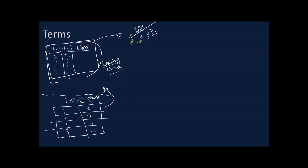We have now separated the training phase from the testing phase and need to evaluate our classifier's performance. One very intuitive and easily implemented metric is accuracy. We take the unseen samples — let's say 100 — plug each one into the classifier, and see what the classifier produces.